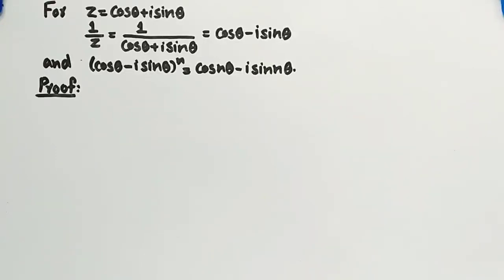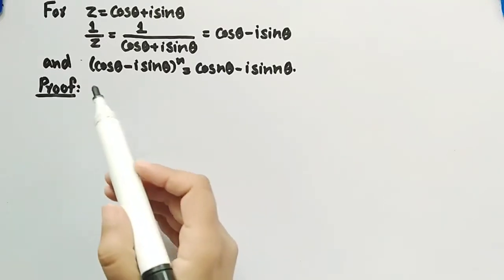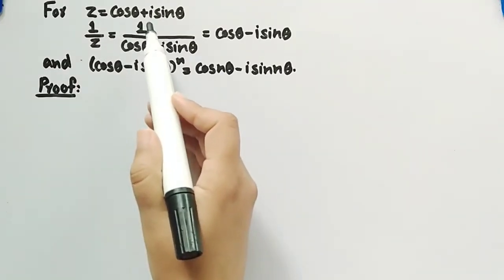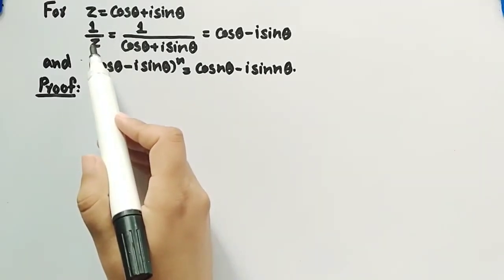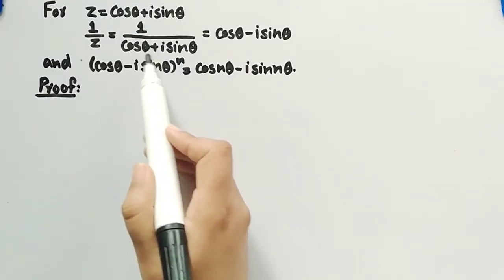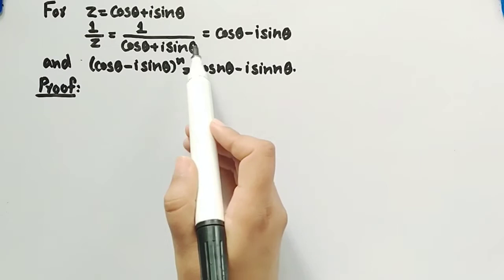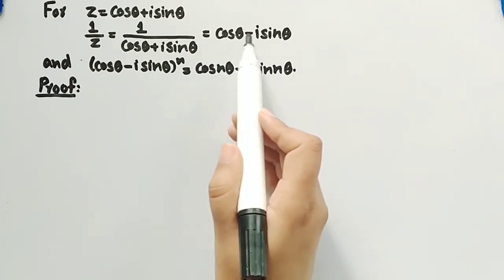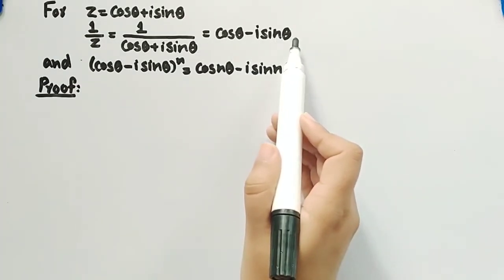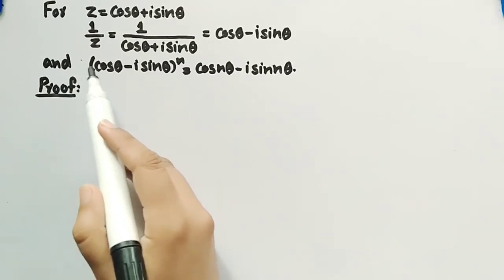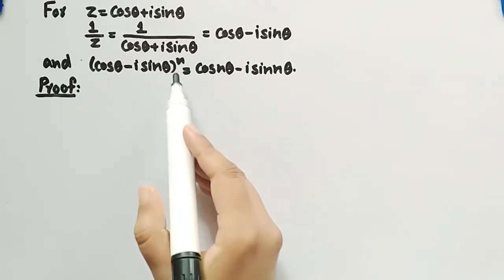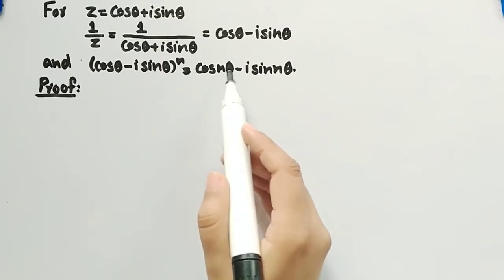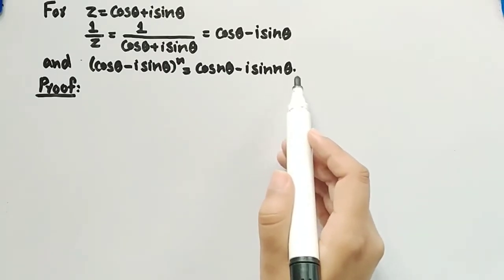In this video, we will prove an important result: for any complex number z equal to cos θ + i sin θ, 1/z equals cos θ − i sin θ. We will also show that (cos θ − i sin θ) raised to power n is equal to cos nθ − i sin nθ.